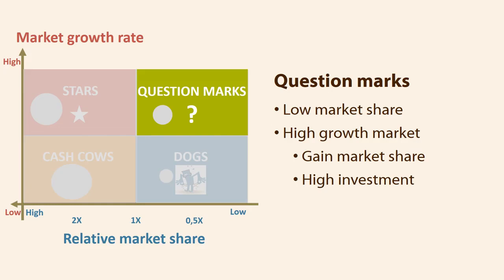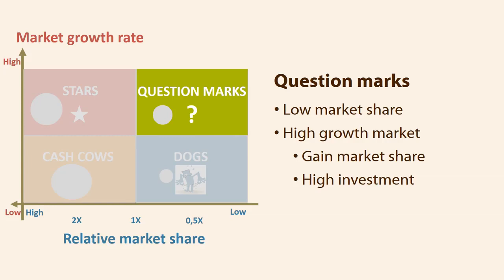Question marks are products that are in a market with high growth but with a low relative market share. They are typically brand new products unknown to the market, where the company has to struggle to gain market share. It usually requires a lot of investment. They are known as problem children and can be turned into stars or end up as dogs. Nestle is a good example — the company is continually launching new products, some of which become classics while others quickly disappear.